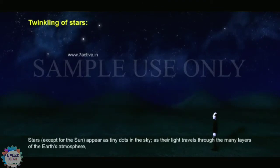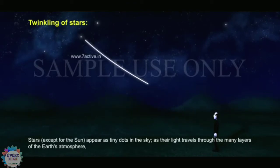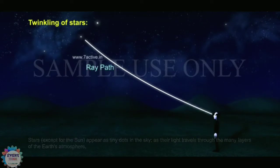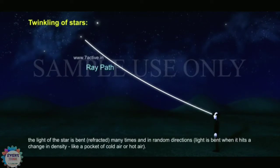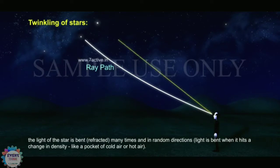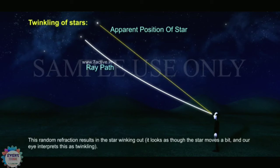Stars, except for the sun, appear as tiny dots in the sky. As the light travels through the many layers of the Earth's atmosphere, the light of the star is bent, refracted, many times, and in random directions. Light is bent when it hits a change in density, like a pocket of cold air or hot air. This random refraction results in the star winking out. It looks as though the star moves a bit, and our eye interprets this as twinkling.